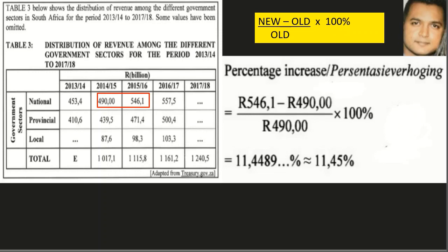From Grade 9 work, the formula for percentage increase and decrease is: (new − old) ÷ old × 100. We call it percentage increase here because the amounts have increased over those years, from 490 to 546. Substituting into the formula: we take the new amount of 546 minus the old amount of 490, divided by the old amount 490. The old price refers to the previous year 2014, and the new price refers to the more recent year 2015.